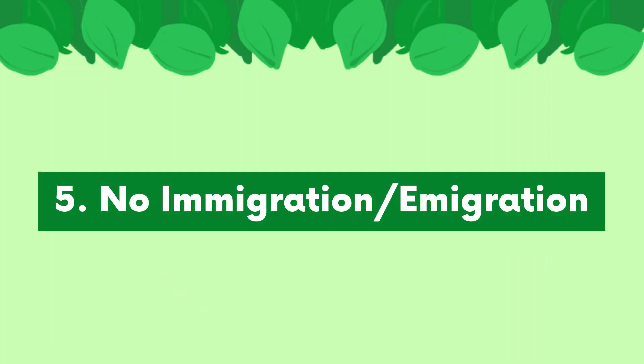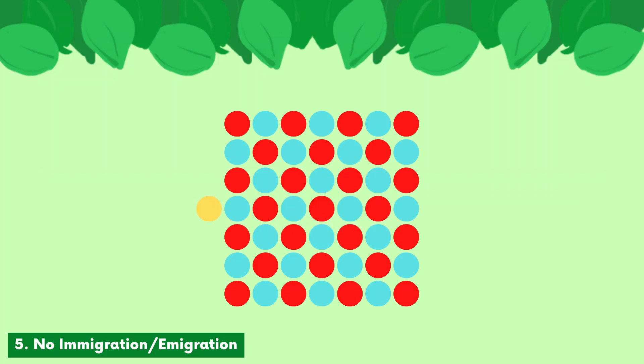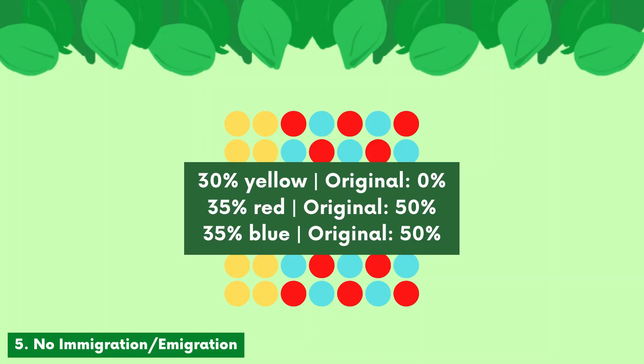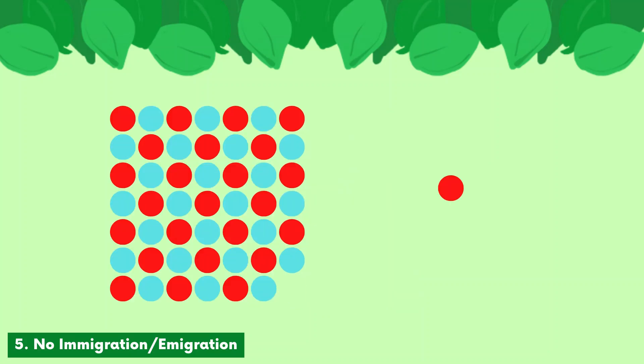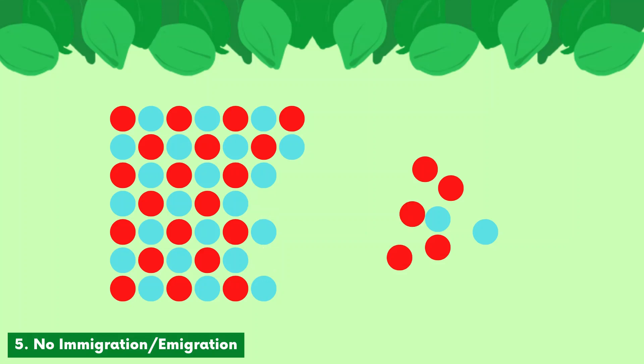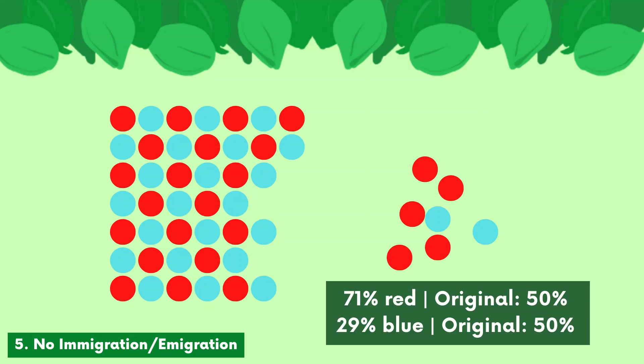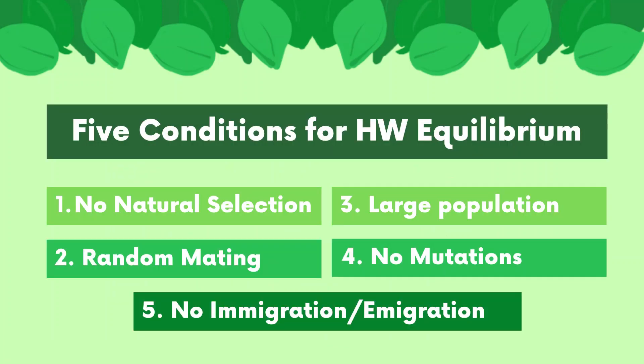Lastly, there must not be immigration or emigration. If any new organisms are introduced to the population, new alleles will be added to the gene pool and the frequencies of the alleles will change. If a group leaves the population, alleles may be removed and the frequencies will change. Both examples disrupt Hardy-Weinberg equilibrium. So, to sum it up, if all five of these conditions are met, the population is said to be in Hardy-Weinberg equilibrium.